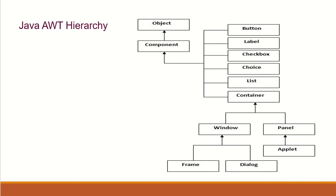This is the hierarchical class diagram that connects to AWT. There is a super class called Object which is inherited by another class called Component, which in turn becomes the parent for all these classes. The button class, the label class - you can see all of them are classes. If you want to create a button, you use the button class; if you want a label, you use the label class. All of these classes are inherited from the Component class.